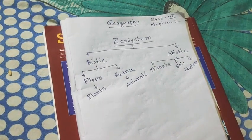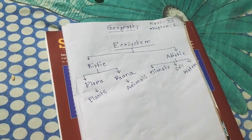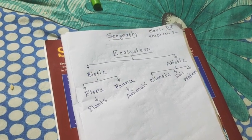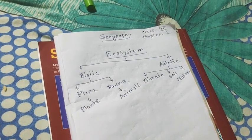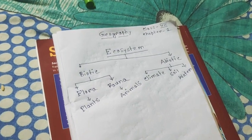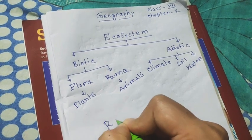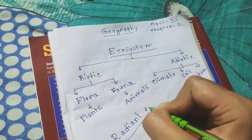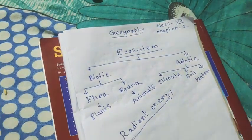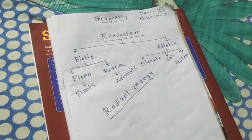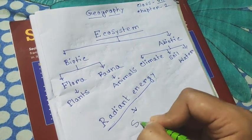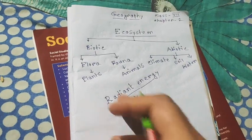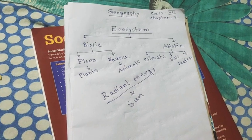Ecosystems are dependent on both biotic and abiotic resources. The fundamental source of energy in almost all ecosystems is radiant energy — that which we get from the sun.